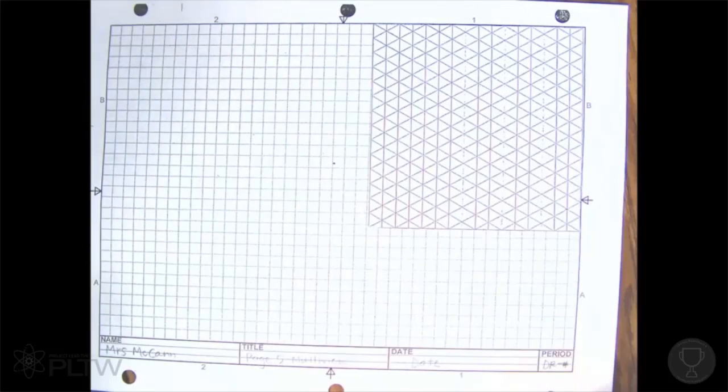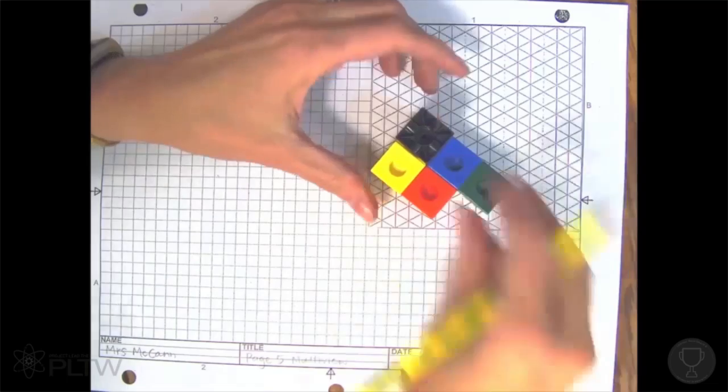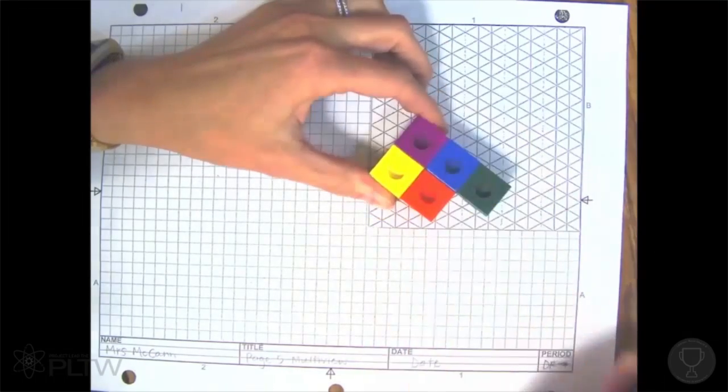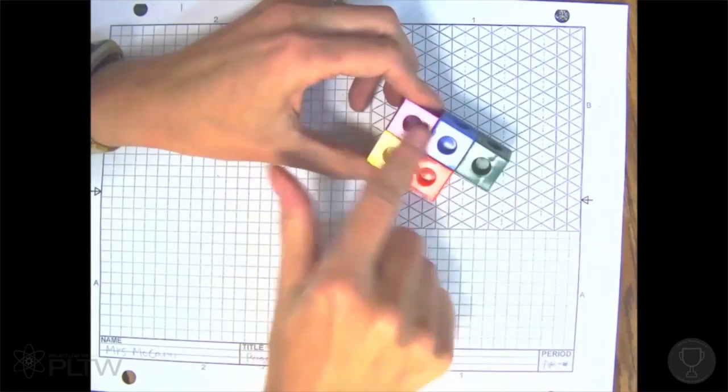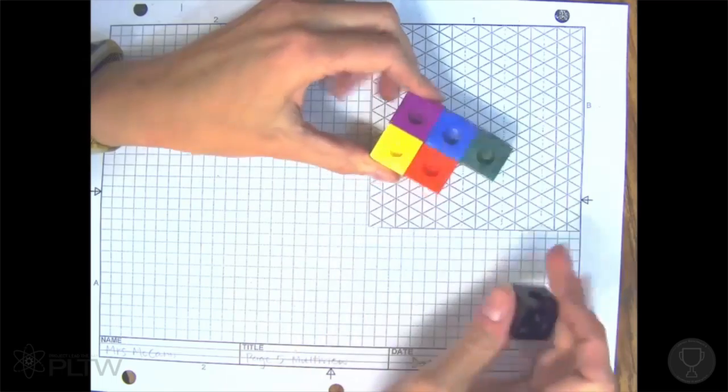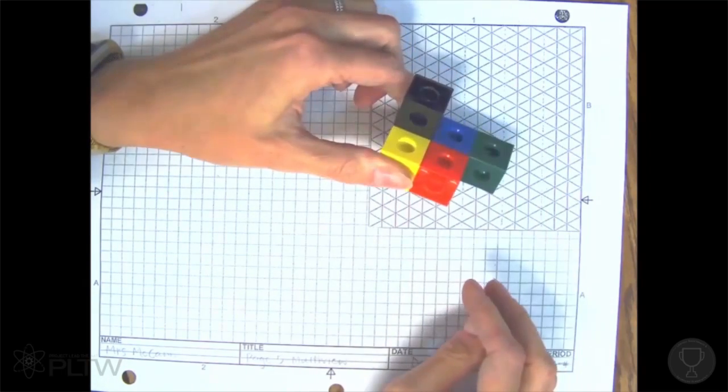We're going to start out our multi-view by drawing a familiar shape. So let's go ahead and make sure that you have this shape built. It is three blocks across, two blocks, and then the upper block goes right there on top.